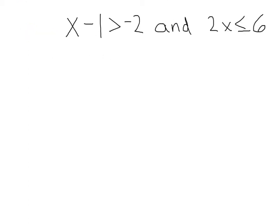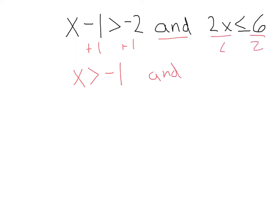Let's do another. Here we have x minus 1 is greater than negative 2, and 2x is less than or equal to 6. Our first step is to get our x's by themselves. We add 1 to both sides: that gives us x is greater than negative 1. We still have our and. Then we divide by 2: that gives us x is less than or equal to 3. Now that we've got each solved, let's graph them individually.